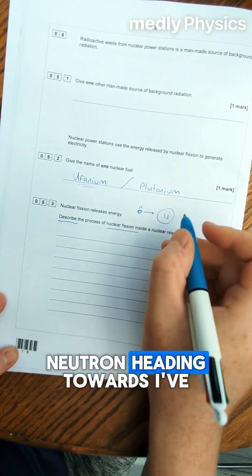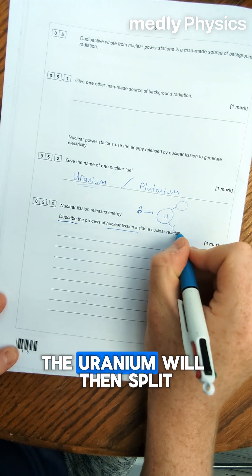First of all we can see a neutron heading towards a uranium nucleus here. The uranium will then split.